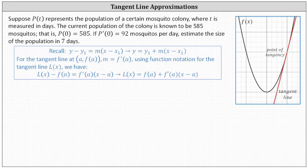Recall that p prime of zero is equal to the slope of the tangent line at t equals zero, which also represents the instantaneous rate of change of the mosquitoes at time t equals zero. We can use this information to determine the equation of the tangent line at t equals zero and then use the tangent line to approximate the mosquito population in seven days.